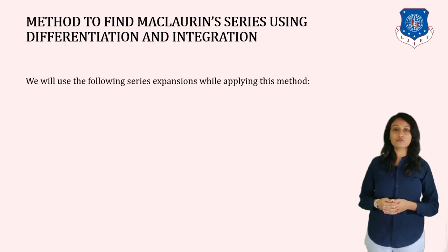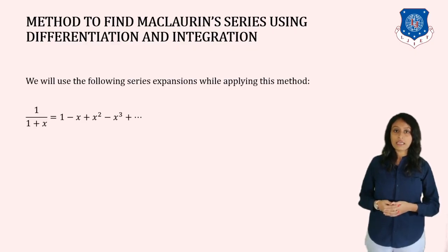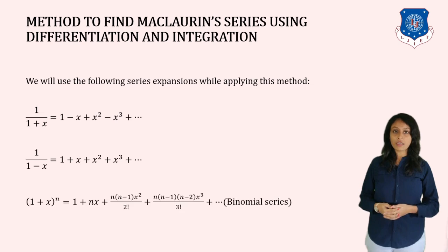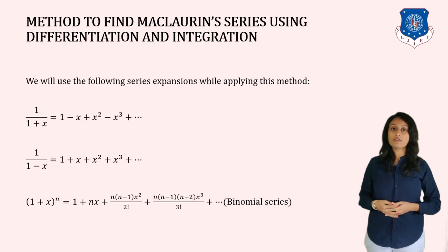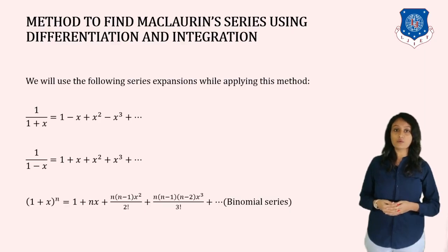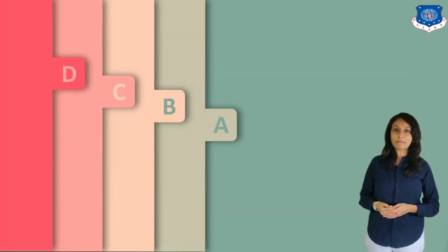We will see the method to find Maclaurin series using differentiation and integration. We will use the series 1/(1+x) and 1/(1-x), and the binomial series formula (1+x)^n. These three series were seen in the previous video. To recap: 1/(1+x) = 1 - x + x² - x³ + …; 1/(1-x) = 1 + x + x² + x³ + …; and the binomial series (1+x)^n = 1 + nx + n(n-1)x²/2! + … Let's move to the example.